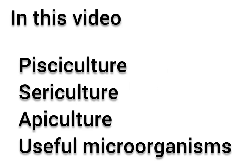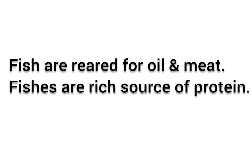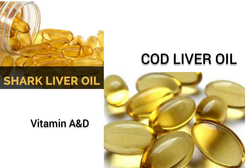Hello students, let us continue chapter 9. In this video we will learn about pisciculture, sericulture, and the use of microorganisms. Pisciculture is the rearing, breeding, and management of fish on a large scale. Fish are reared for oil and for meat; they are rich sources of protein. Shark liver oil and cod liver oil are extracted from the liver of these fish and are good sources of vitamin A and vitamin D.